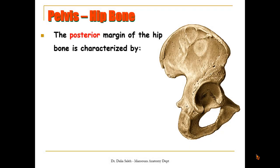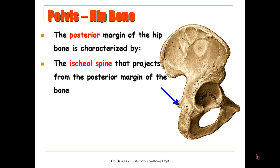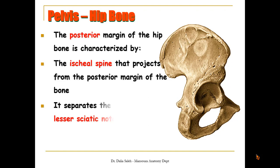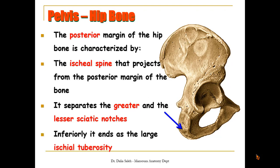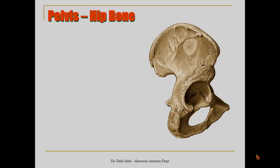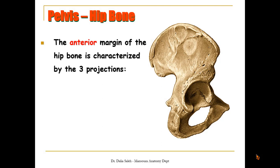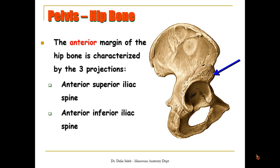The posterior margin of the hip bone is irregular and characterized by the presence of a spine — we call it the ischial spine — that projects from its posterior margin, separating the greater and the lesser sciatic notches. Inferior to the lesser sciatic notch lies a bony projection we call the ischial tuberosity. The anterior margin of the hip bone is characterized by the presence of three projections: the anterior superior iliac spine, the anterior inferior iliac spine, and the pubic tubercle.